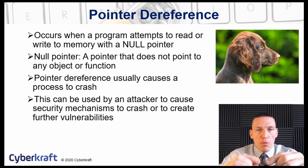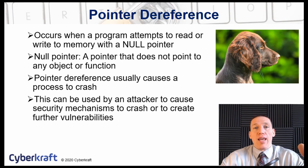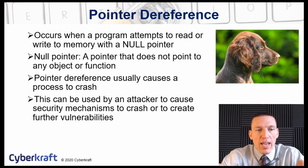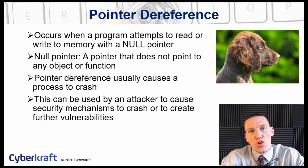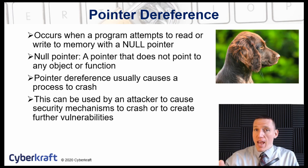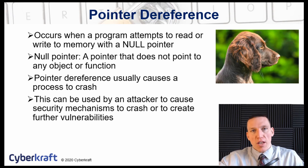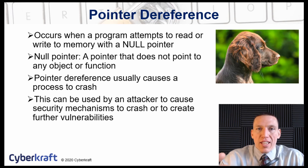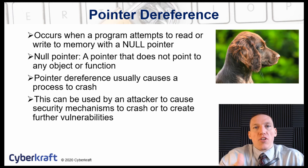If at any point a program's pointer becomes a null pointer, the program will usually crash because it can't access the memory it needs to run. An attacker can force a pointer to become null, causing a program to crash — by doing so, the attacker is conducting an availability attack by dereferencing pointers and causing different programs to crash.